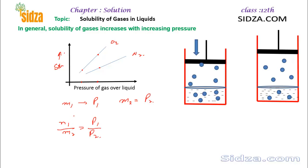So M1 is the solubility of the gas at pressure P1 and M2 is the solubility of the gas at pressure P2. This is just like a linear equation. Therefore, you can find the solubility of a gas at any other pressure using this ratio.